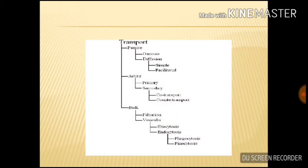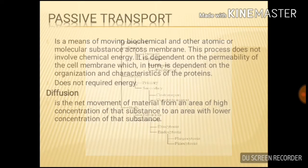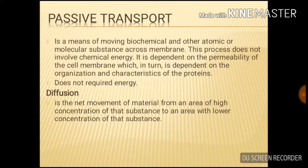There are two types of transport mechanism: passive transport and active transport. Passive transport is a means of moving biochemical and other atomic or molecular substances across a membrane. This process does not involve chemical energy. It is dependent on the permeability of the cell membrane, which in turn is dependent on the organization and characteristics of the membrane proteins. Diffusion and osmosis are both examples of passive transport.